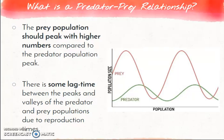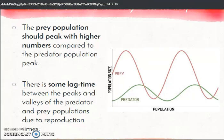If scientists see that this pattern starts to change, they may need to get involved and help either the predator population or the prey population to survive, which helps both those organisms as well as other organisms within the ecosystem.